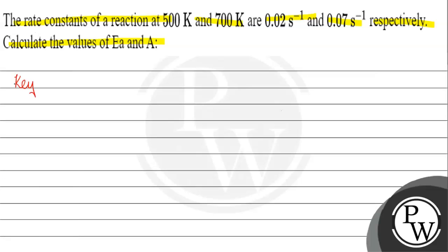The key concept for this question is, we have two reaction rate constants and the temperatures are given to us. How can we write this? We can write log K2 by K1 equals energy of activation by 2.303R, 1 by T1 minus 1 by T2.